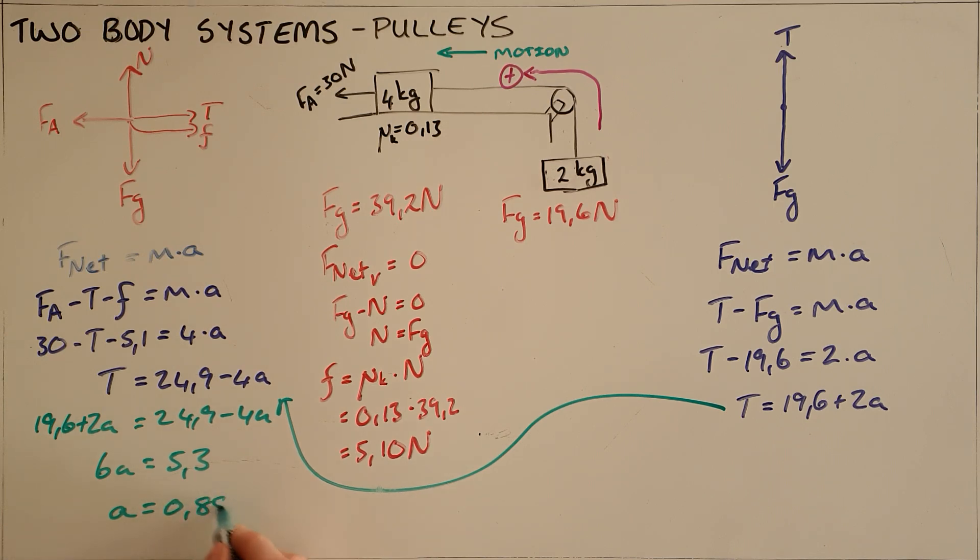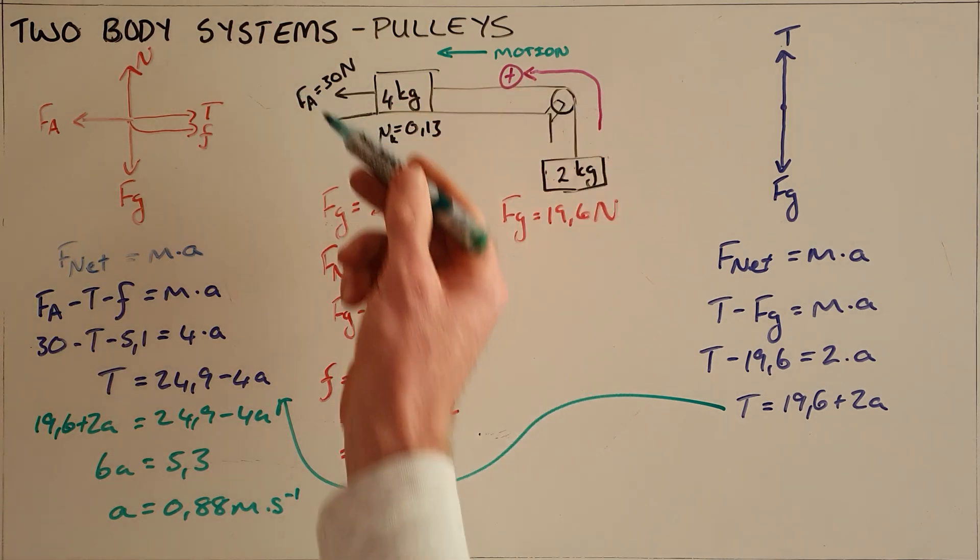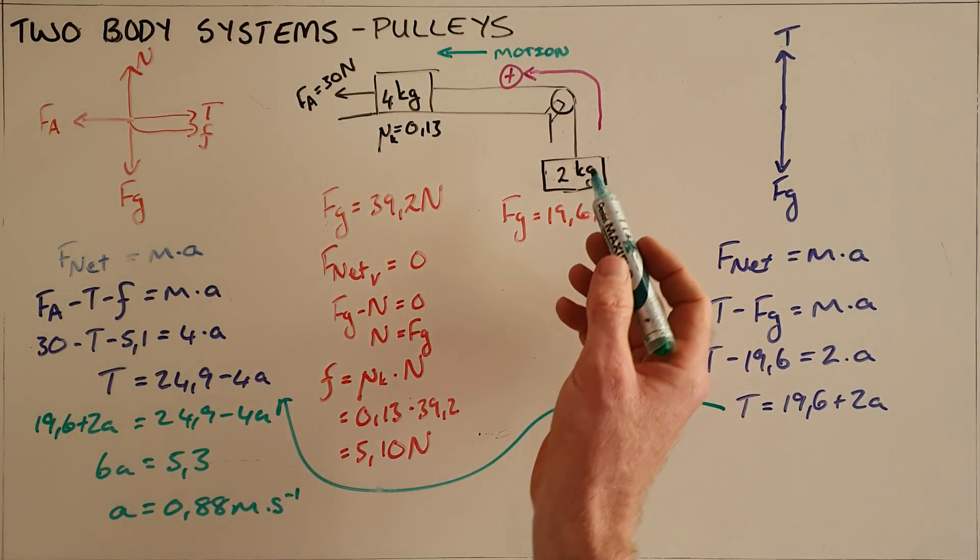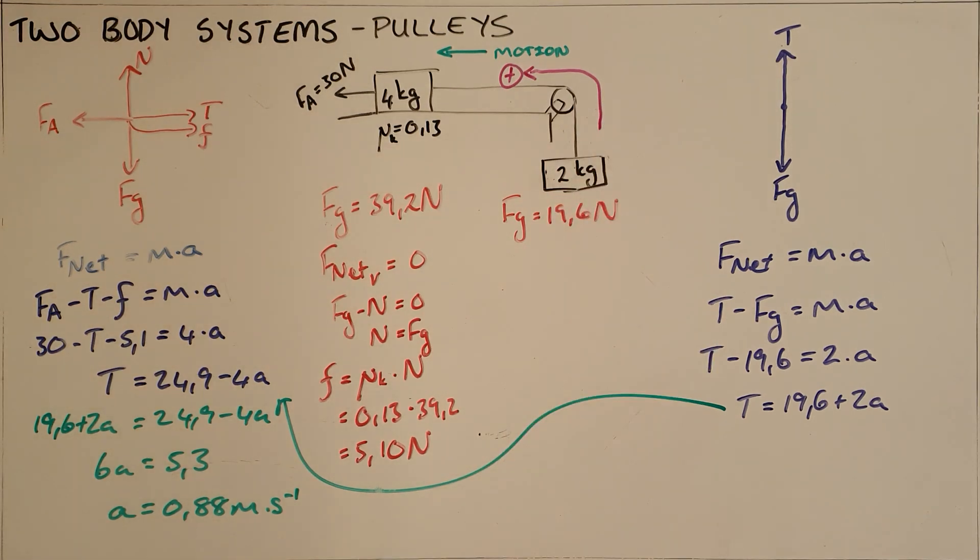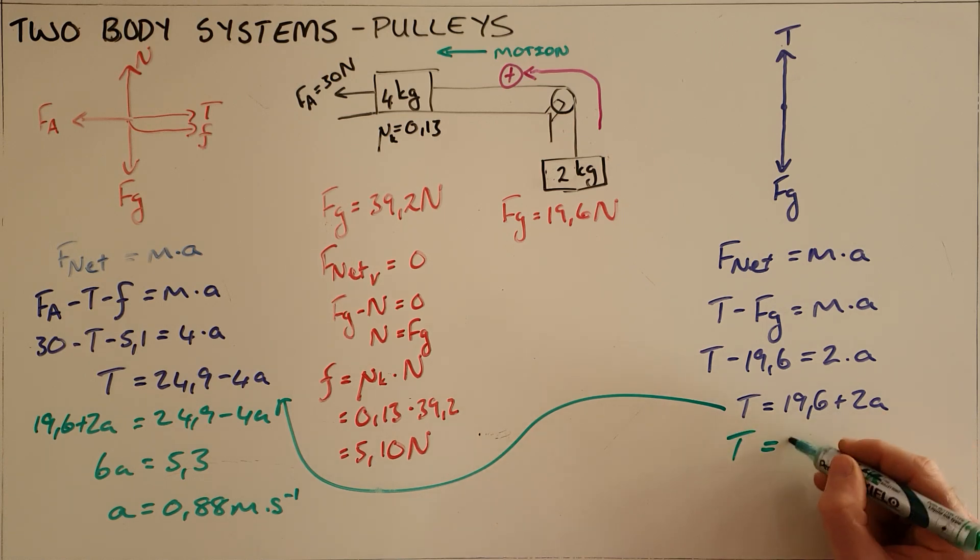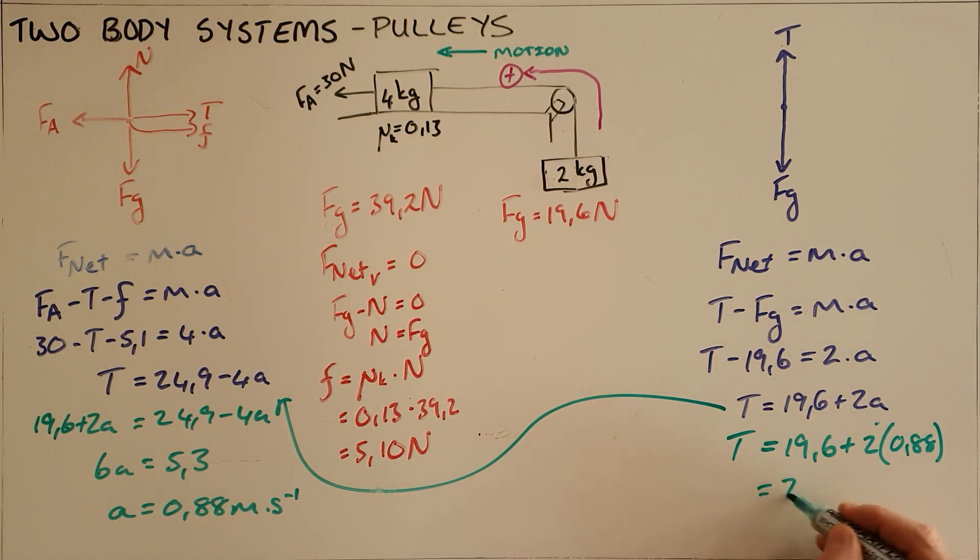This is a positive value, so it means it's to the left for our 4 kilogram object and upwards for our 2 kilogram object. Finally, we can calculate the tension in the string by substituting in that acceleration. Since the acceleration is constant for both objects as they are linked together, we can solve to find that this rope has a tension of 21.36 newtons in it.